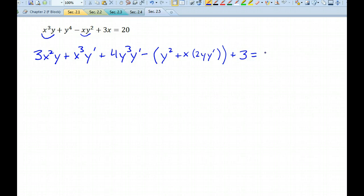And then we're going to do the derivative of 3x, which is 3, and the derivative of 20 is 0. So let's group all of our y prime terms together. I'm going to have x cubed y prime plus 4y cubed y prime. Then I have a minus 2xy y prime, and I'm going to put all the other terms on the other side. So I'll have a minus 3x squared y, a minus y squared, and a minus 3.